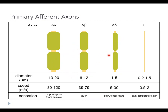At the very end you have C fibers. C fibers have very thin diameters — all the way down to 0.2 microns, meaning 200 nanometers across would be a typical small C fiber — and they have no myelin, so C fibers are completely unmyelinated.